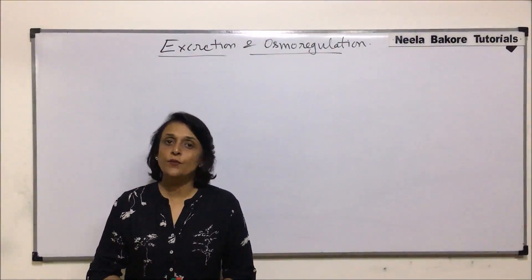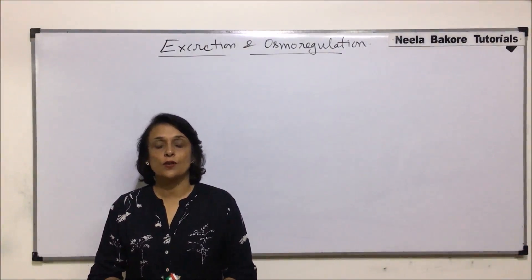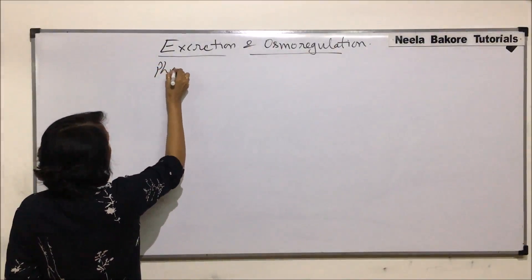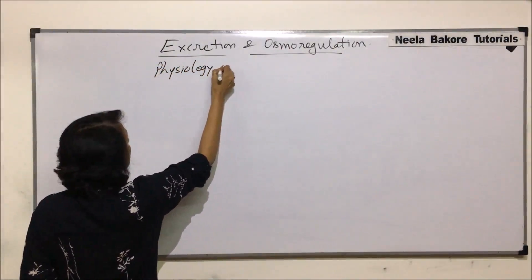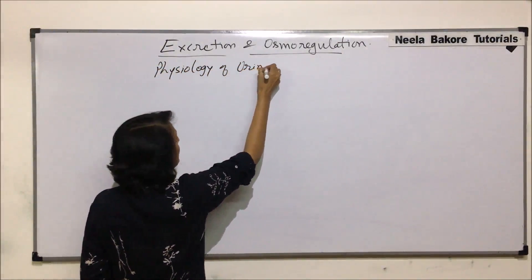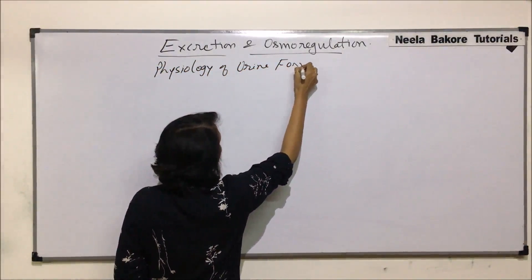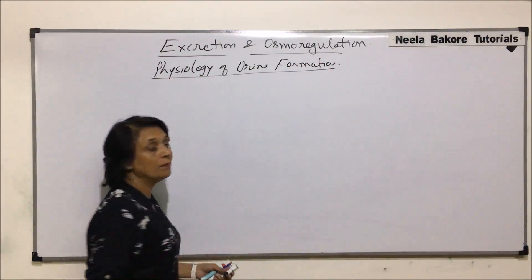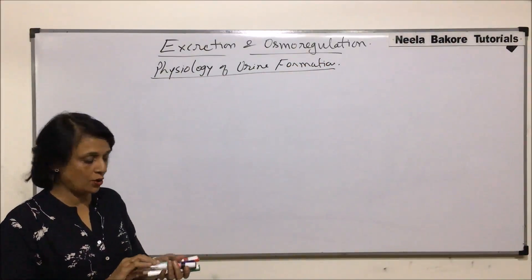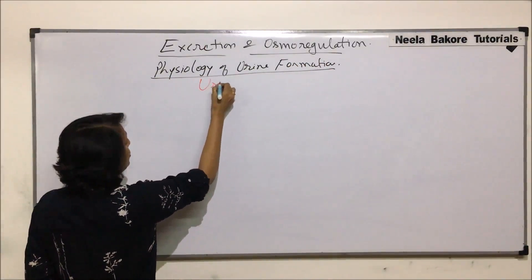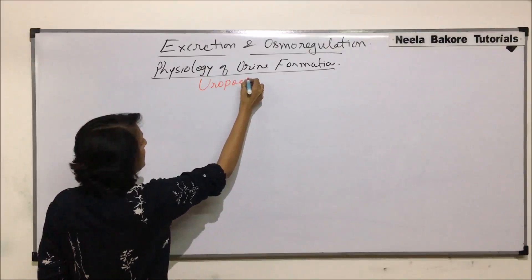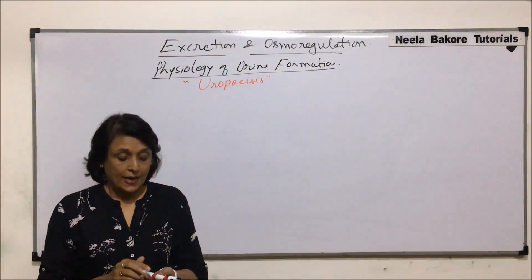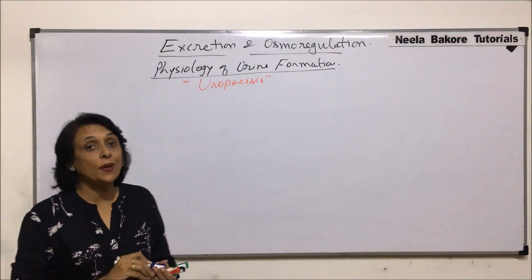In this video, we will talk about the process of urine formation — the physiology of urine formation. This complete process is known as uropoiesis, that is formation of urine, and it is completed in three steps.